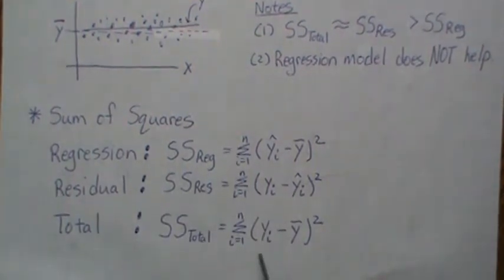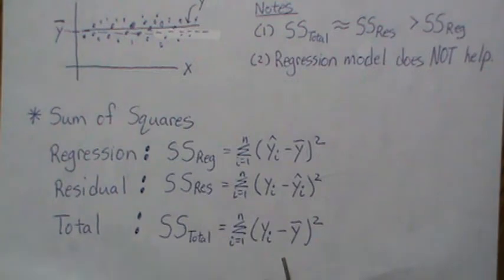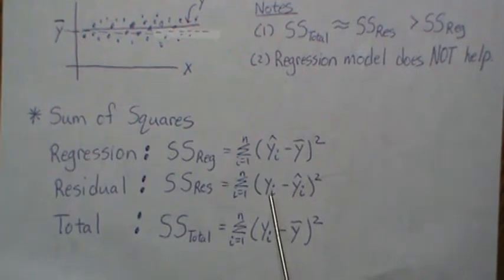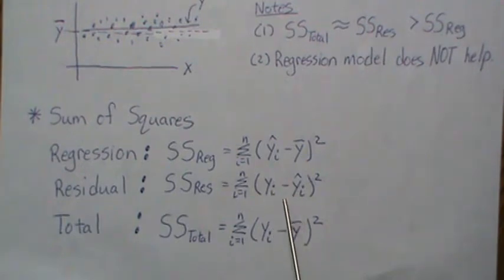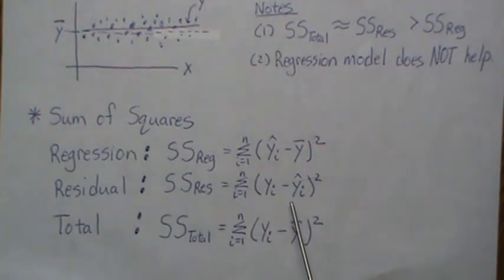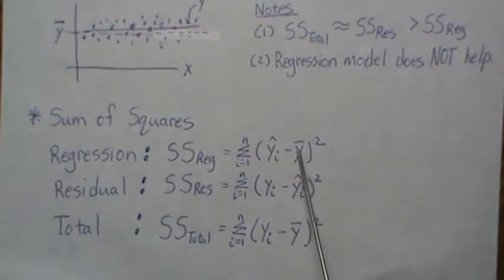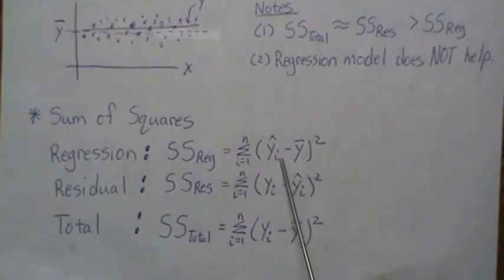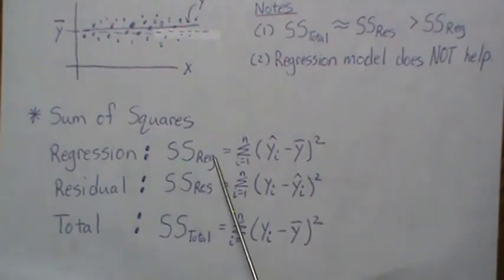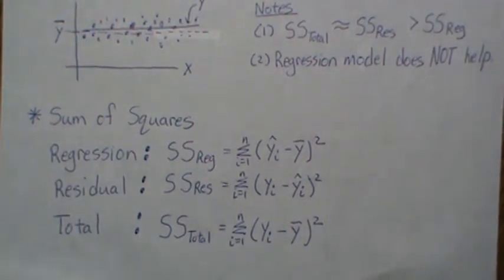In summary: regression sum of squares, residual sum of squares, and total sum of squares. The total sum of squares is like the sample variance — divide by N minus one and you get it. The residual sum of squares is the fluctuation of data around the regression line; divide by N minus two and you get a good estimate of sigma squared, the variance around the line. The regression sum of squares measures how much using the regression line improves over using the mean.